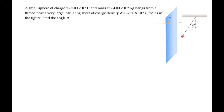The insulating sheet in this problem has a negative charge density, so the electric field lines drawn here in orange will all converge on it. That electric field results in an electric force, q times E, on the positive charge that's hanging from the thread, and that force, together with the charge's weight and the tension, hold the charge in equilibrium.